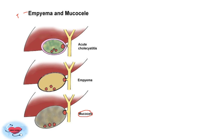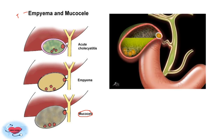Mucocele occurs when the gallbladder wall absorbs all bile and mucus secretions, causing distension — also known as hydrops of the gallbladder. Rarely, cholangiocarcinoma can lead to mucocele. The contents are usually sterile, and the swelling is painless — unlike empyema, which is painful. A non-tender, soft, globular, palpable gallbladder is present in the right hypochondrium. The patient presents with features of dyspepsia. However, if the mucocele becomes infected, it may lead to empyema and a painful, tender condition.